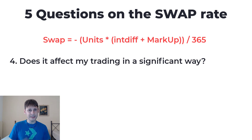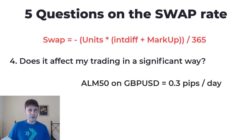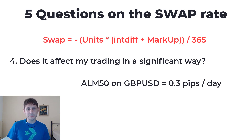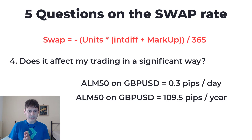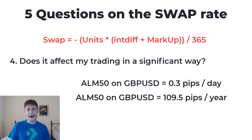Is the swap going to affect my trading in a significant way? The standard answer is no, but it depends on your strategy. Let me give a practical example based on the ARM system, a strategy I share on Udemy, which trades GBP/USD. We pay more or less 0.3 pips per day as swap interest. Of course, from the formula we know it depends on several factors, but checking historical data, on average we pay around 0.3 pips per day. Multiply that by 365 days and we get 109.5 pips — roughly two positions sacrificed every year paying the swap interest rate.